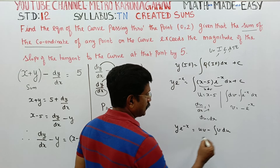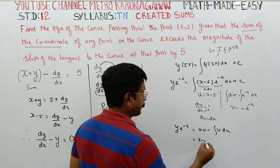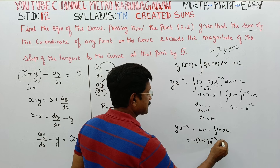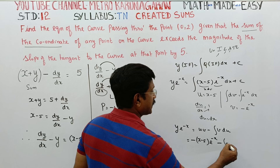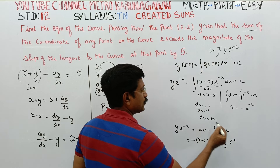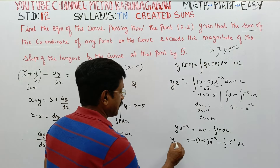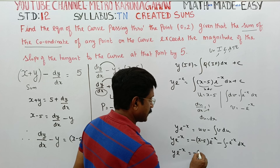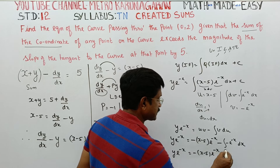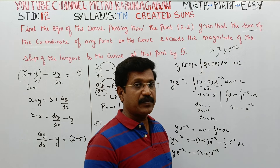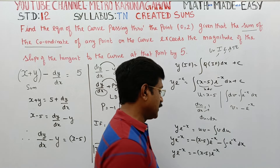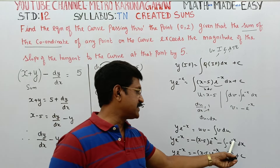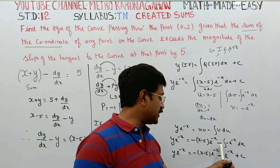Applying the formula uv minus integration of v du: u is (x minus 5), v is minus e^(-x). So we get minus(x minus 5)e^(-x) minus integration of (minus e^(-x)) dx, which gives minus(x minus 5)e^(-x) minus e^(-x). Therefore y·e^(-x) equals minus(x minus 5)e^(-x) minus e^(-x) plus c.